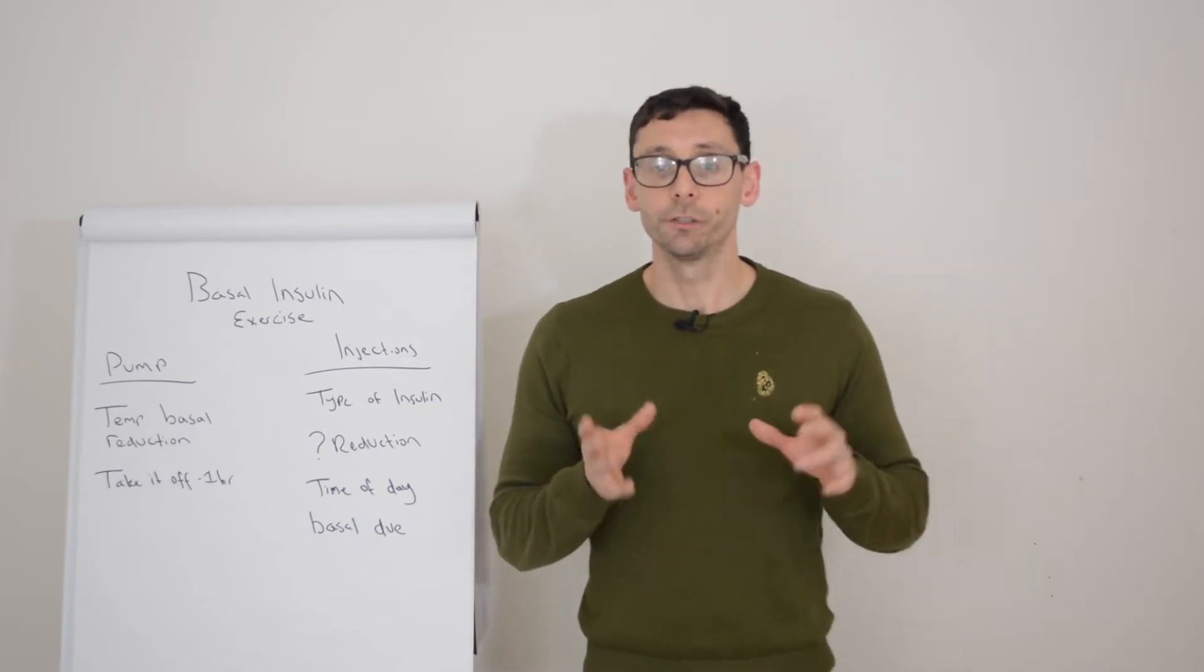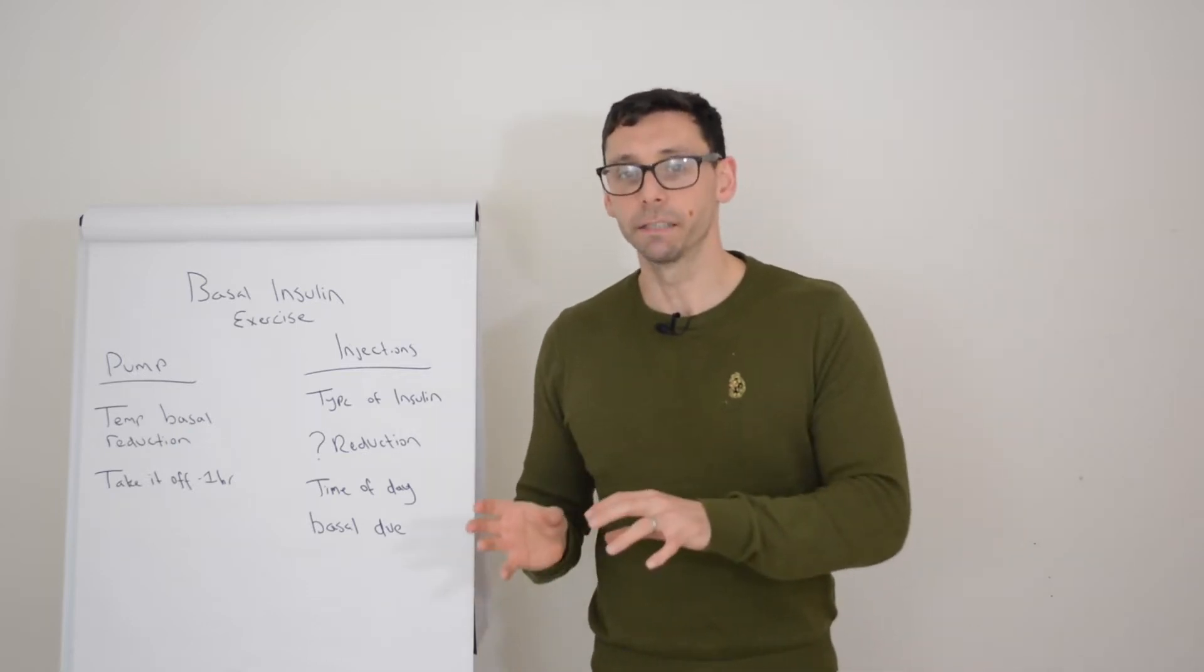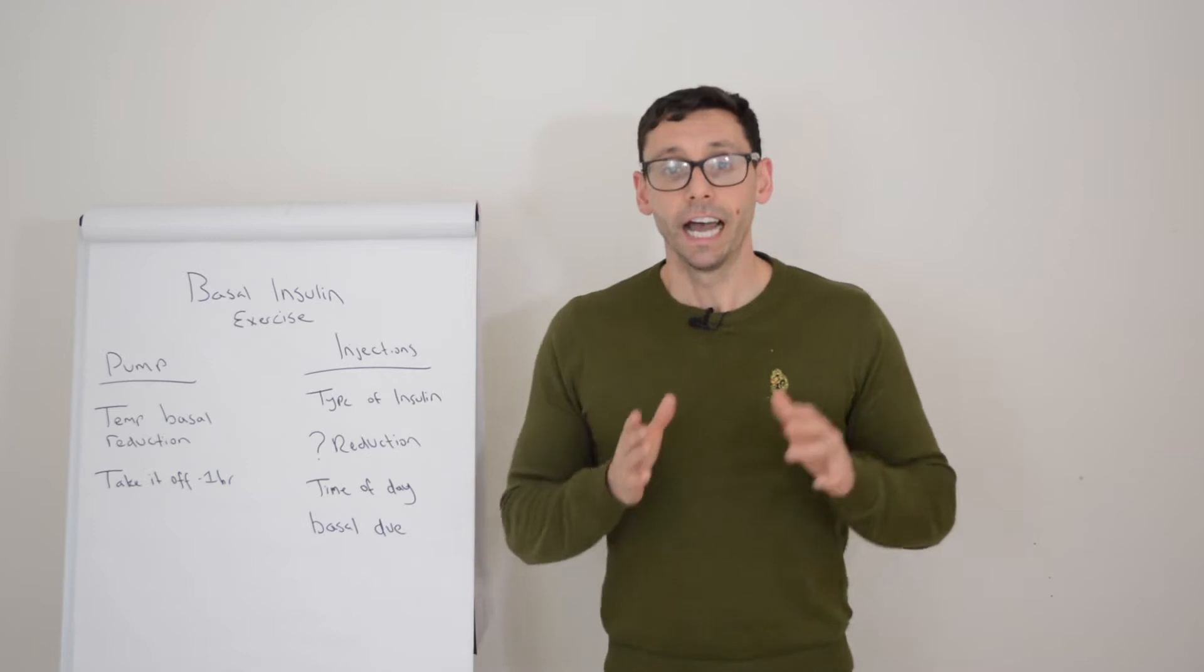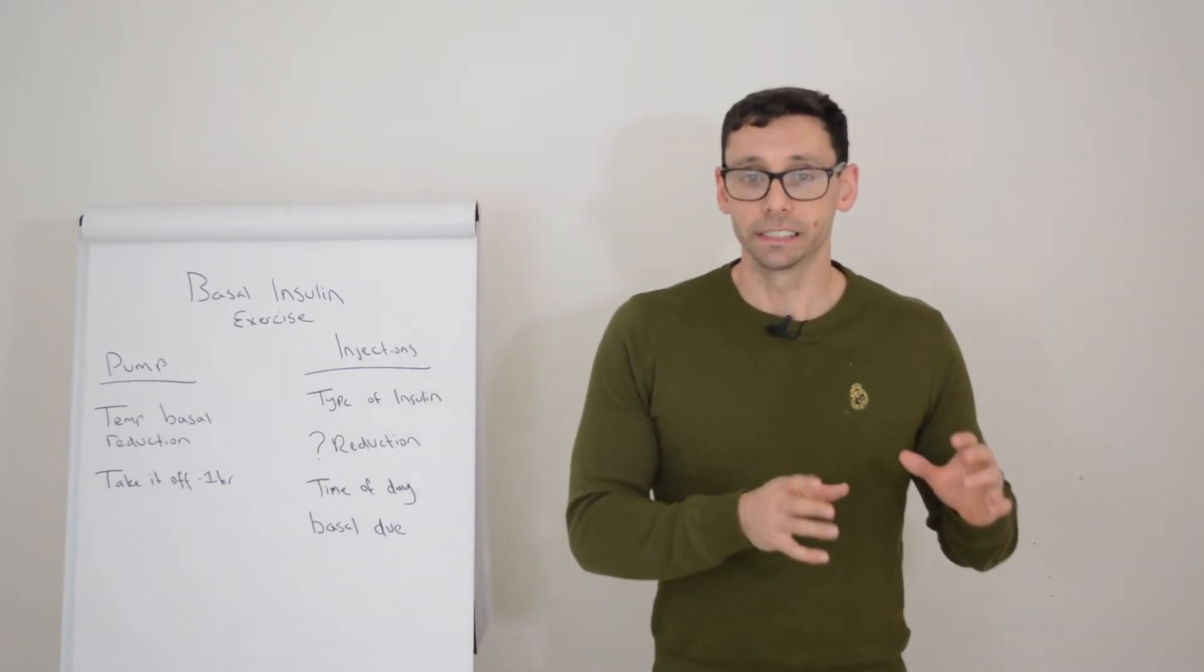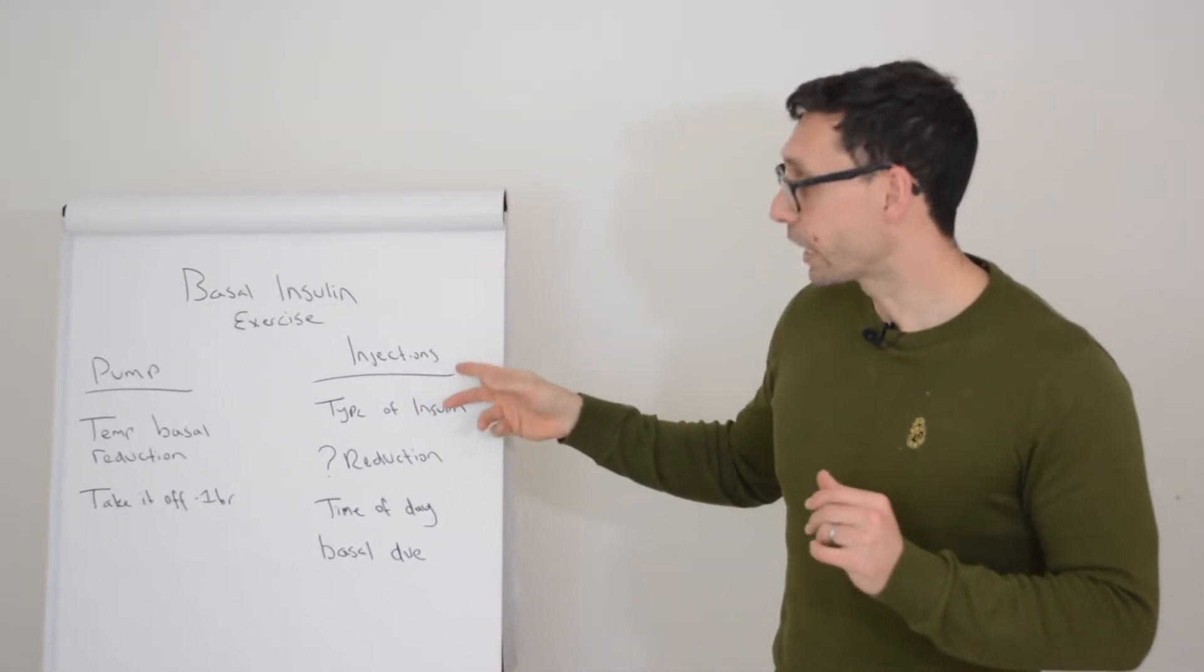Now obviously you have two types of insulin: you have your background insulin or your basal insulin, and you have your rapid insulin. Now again we can do something with both and we're going to start with that basal insulin, the background insulin, and we're going to look at both what to do with the pump and if you're taking injections.